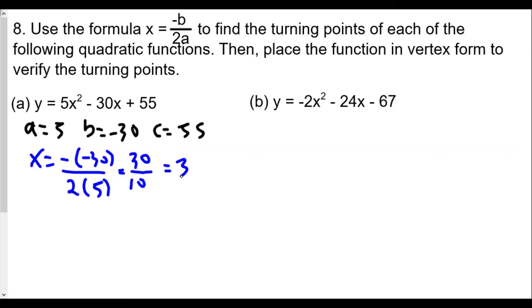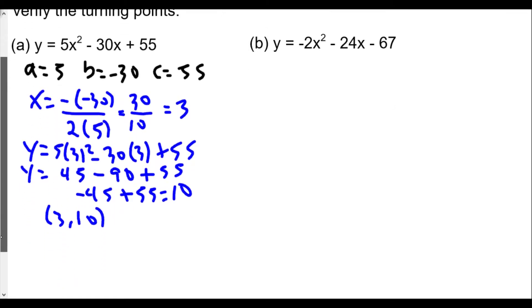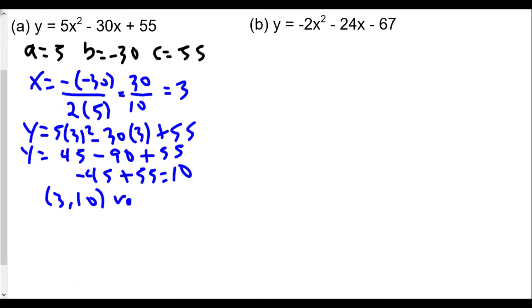We found the axis of symmetry, the x-value of the turning point. Now we find the y-value: y equals 5 times 3 squared minus 30 times 3 plus 55. So y equals, well 9 times 5 is 45, and then 30 times 3 is 90, so 45 minus 90 plus 55, that's negative 45 plus 55 equals 10. So the vertex we have is going to be 3 comma 10. This is the vertex or turning point.